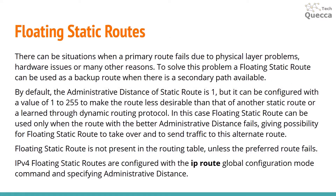There can be situations when a primary route fails due to physical layer problems, hardware issues, or many other reasons. To solve this problem, a floating static route can be used as a backup route when there is a secondary path available.